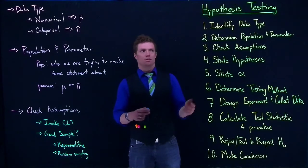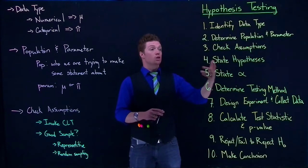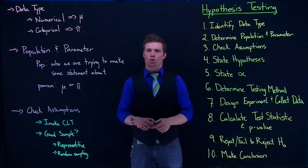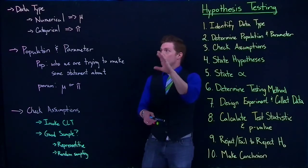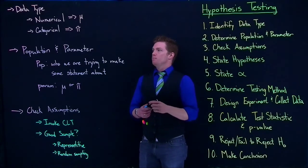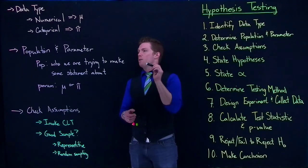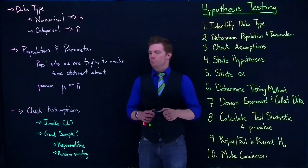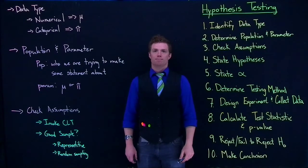We're going to use this ten-step process—I've done it with eight or nine before—but we're going to use these ten steps to help us formalize out our testing. So these are our first three: data type, make sure we got that identified; our population and our parameter of interest; and checking our assumptions.